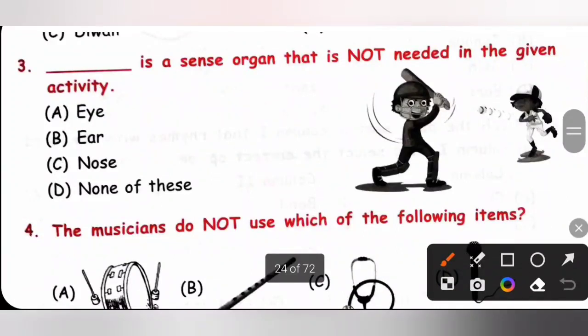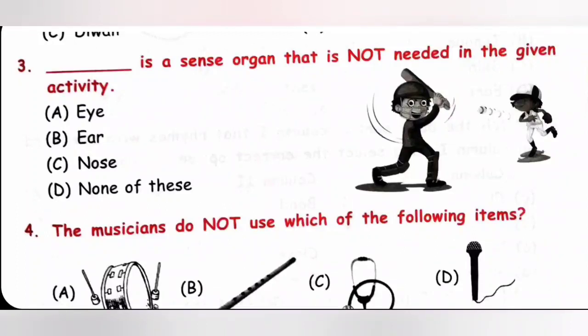Third one. Dash is a sense organ that is not needed in the given activity. So, a boy playing cricket. So, he needs eyes to look at the ball to hit it. To make a run, he needs ear to listen to the other players like his fellow batsman to make run. So, he needs eye and ear. But the question is, dash is a sense organ that is not needed. So, option C nose, he won't use the sense of smell while playing cricket. So, option C is the correct answer.